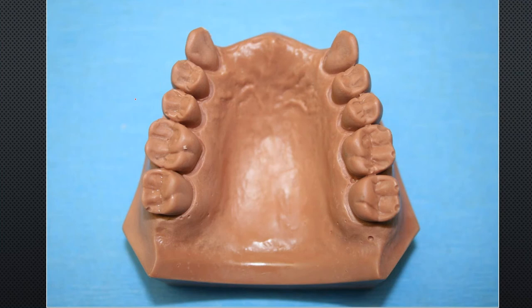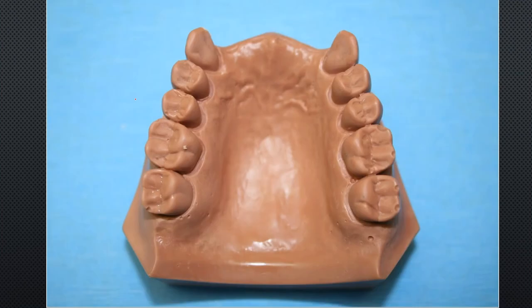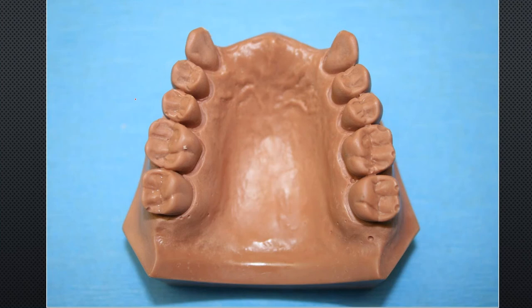The takeaway today is things to think about — not instructions on what to do. When approaching a Kennedy Class 4, there are immediate questions: Does the patient have an existing appliance? Did they have bridgework? What's the opposing dentition — natural teeth, full denture, partial, implants? What's the occlusal classification — Class 1, 2, or 3? What's the overbite? What's the health of the remaining clinical crowns and tissue? All these must be combined for a treatment plan.